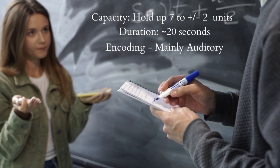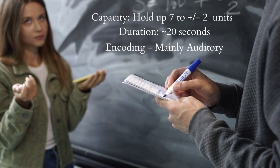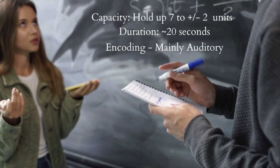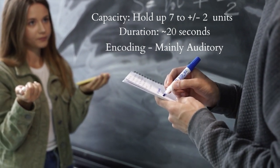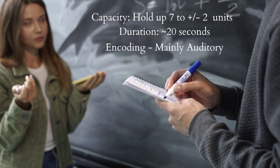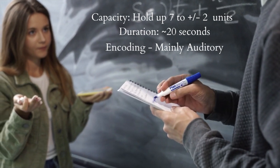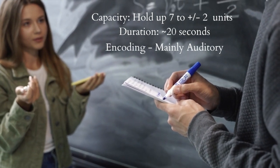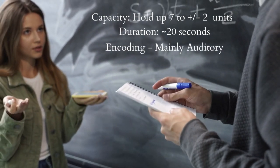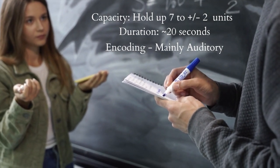The STM holds these 7 ± 2 items for approximately 20 seconds, which is a much longer duration compared to sensory memory. Encoding in the STM is usually auditory in nature. An example of STM would be trying to remember and store your friend's phone number. Those 20 seconds of duration are also enough time to repeatedly rehearse this information in order to transfer it to the next and final memory storage stage, which is the LTM or long-term memory.